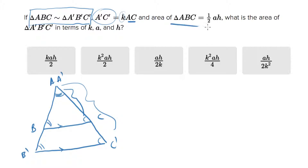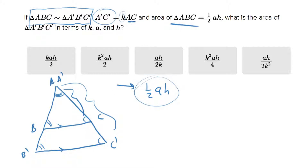They tell you the area of the small triangle is one-half AH. Where that comes from doesn't matter at all — it happens to look like the formula for the area of a triangle, but that doesn't matter even a little bit. This is the value for the area of the small triangle. What they're telling us is to convert that into the area of the big triangle, and give the answer in terms of AH and K. I just need to convert the area of the small into the area of the big, keeping it in terms of A and H, using K if needed.